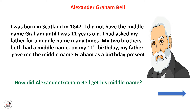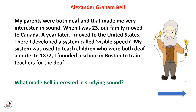Now, how did Alexander Graham Bell get his middle name? My parents were both deaf and that made me very interested in sound. When I was 23, our family moved to Canada. A year later, I moved to the United States. There, I developed a system called visible speech. My system was used to teach children who were both deaf and mute. In 1872, I founded a school in Boston to train teachers for the deaf.